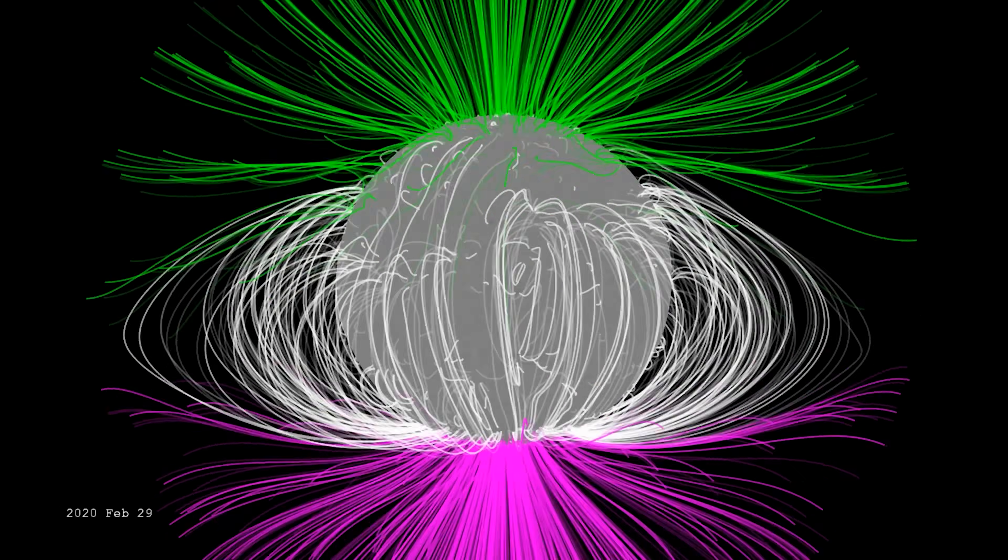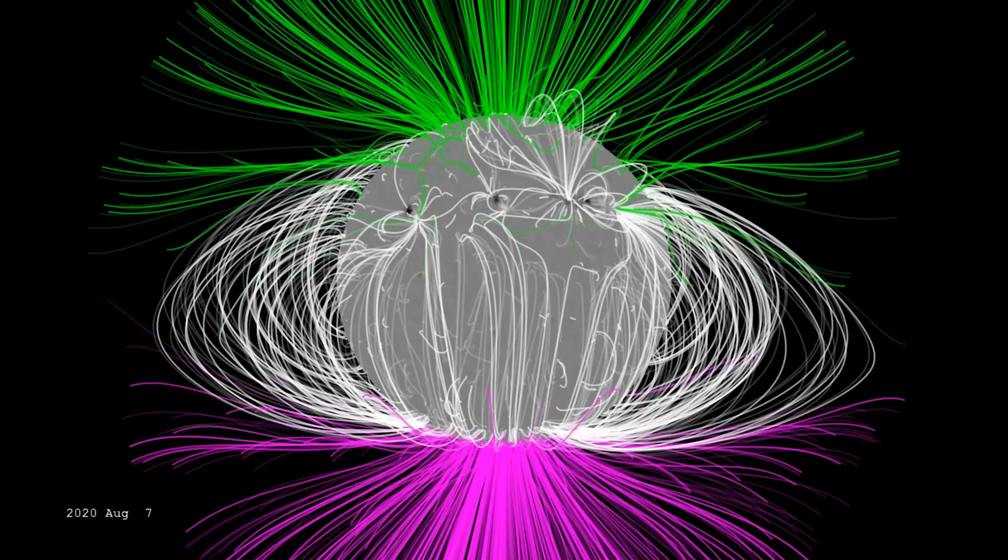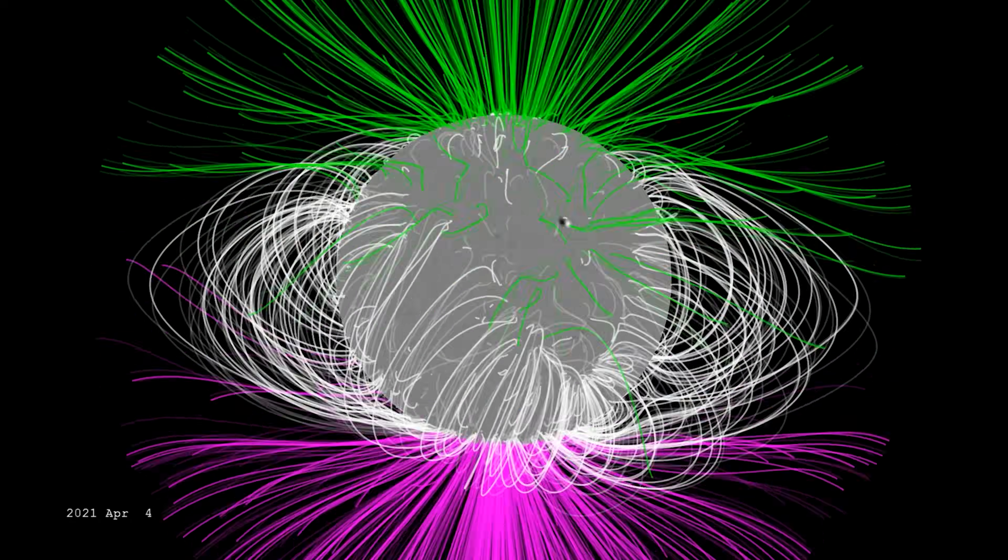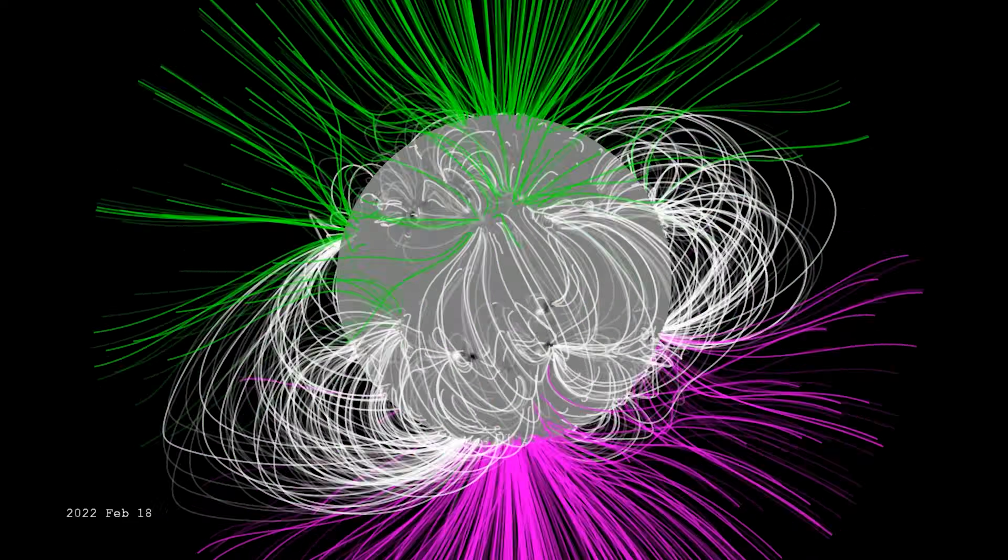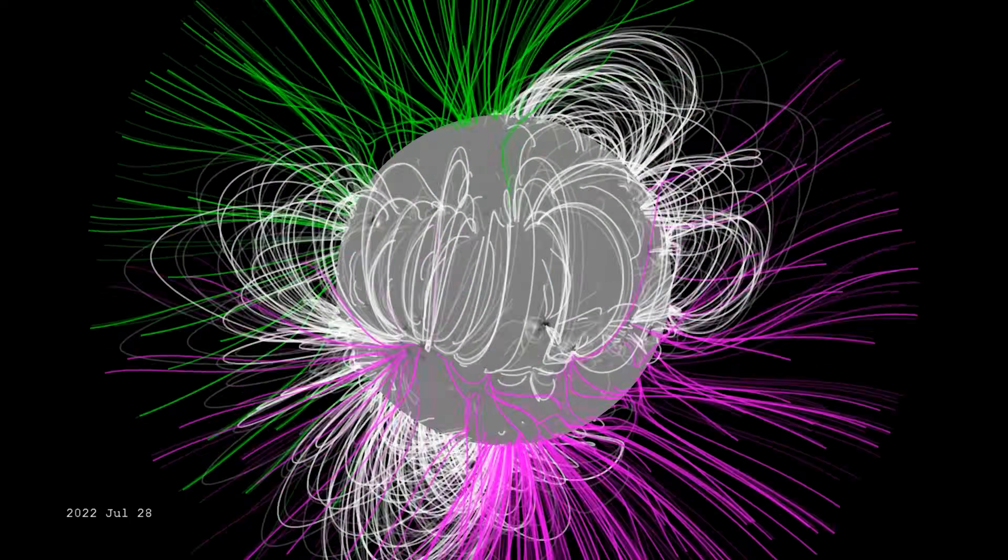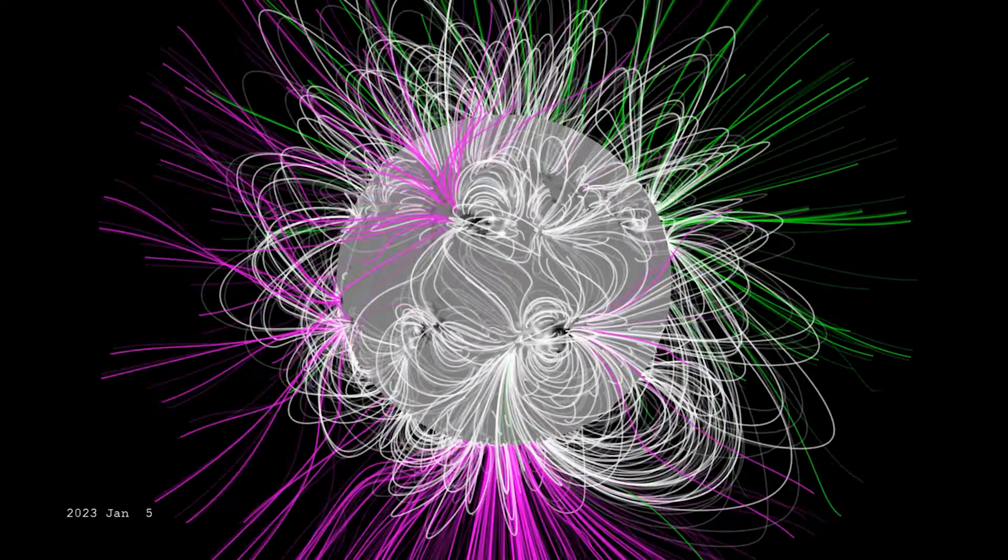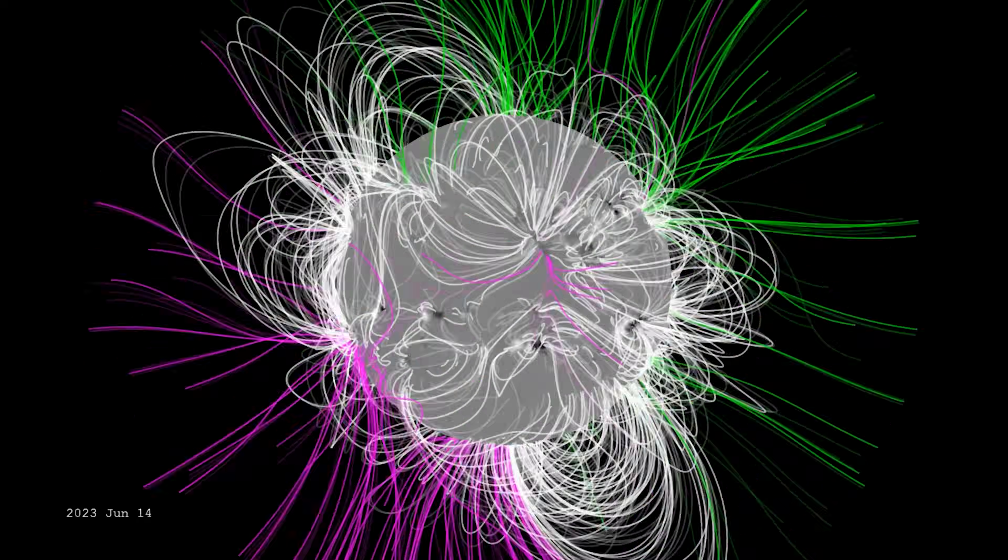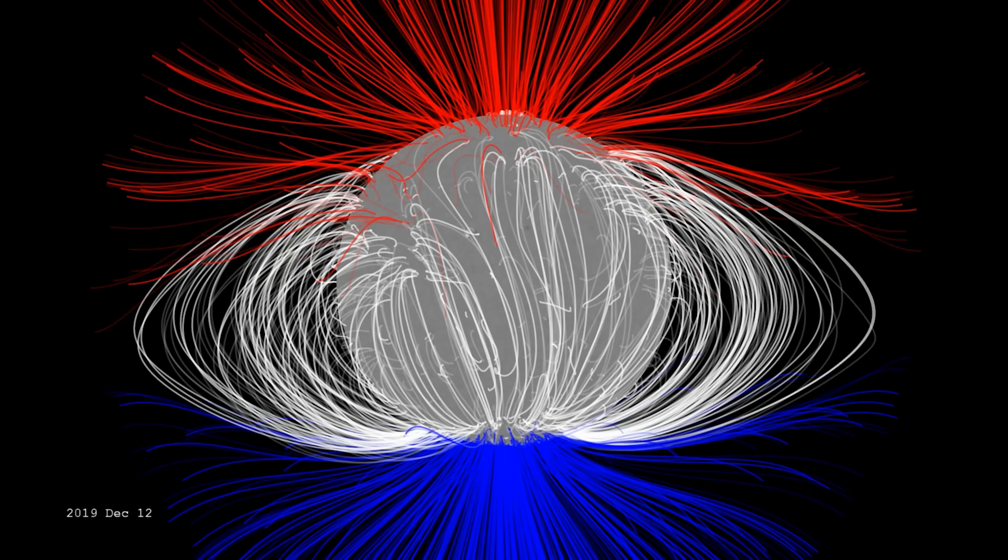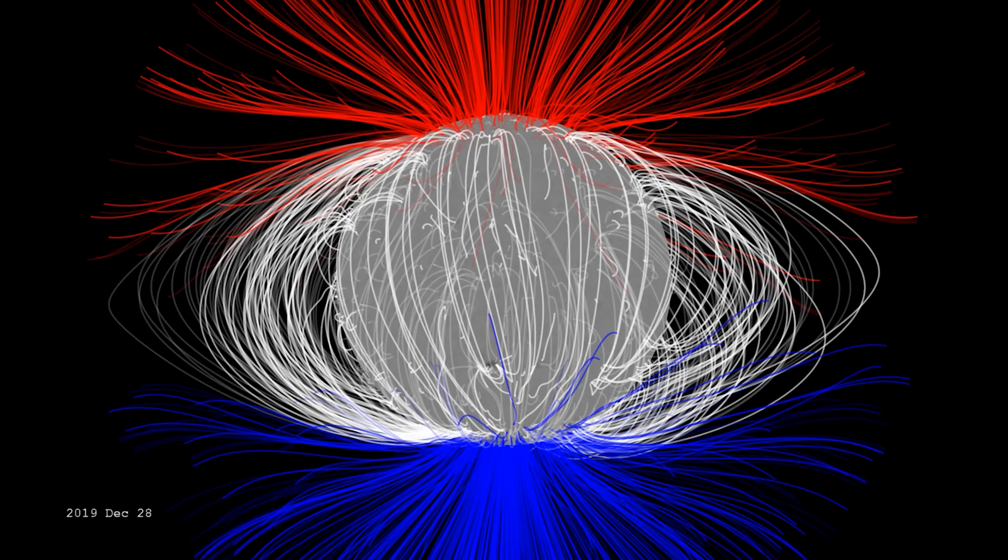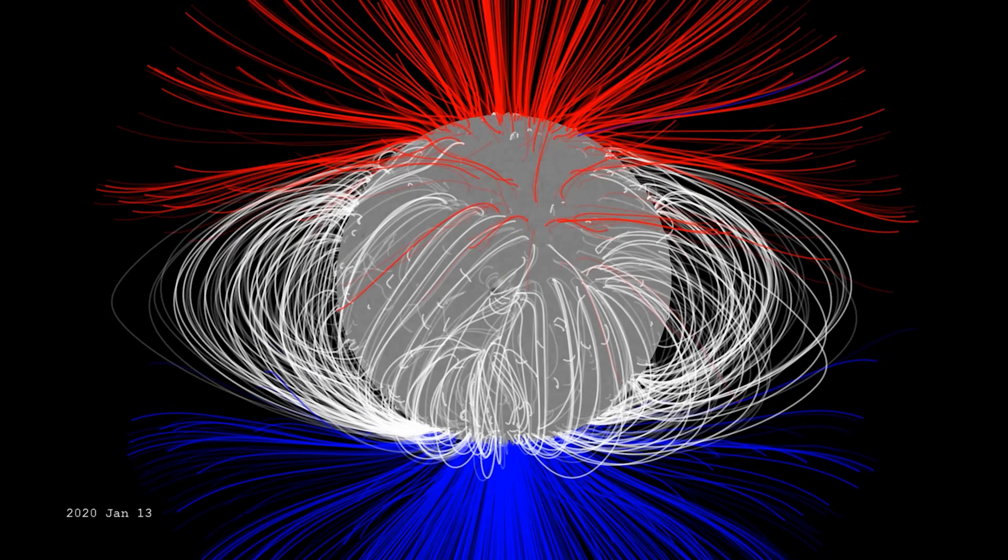Because over time, the magnetic field created by all of this churning plasma becomes so tangled and stressed that it eventually becomes unstable, snaps, and then reorganizes itself in the opposite direction, causing a complete reversal of the Sun's magnetic north and south poles. As this new magnetic field strengthens, the twisting and churning starts all over again, and the cycle begins anew, approximately once about every 11 years.